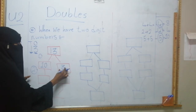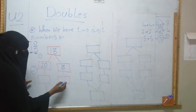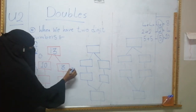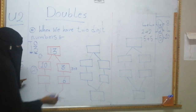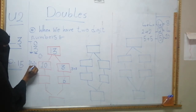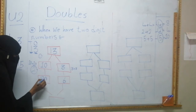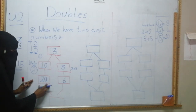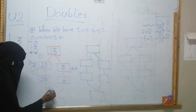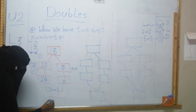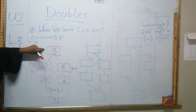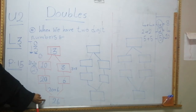Step two: we are going to double these numbers — double the ones and double the tens. Double three equals six, that means three plus three equals six. What about the tens? Ten plus ten equals twenty. So here we have twenty and here we have six. The last step: twenty plus six equals twenty-six. That means double thirteen equals twenty-six.